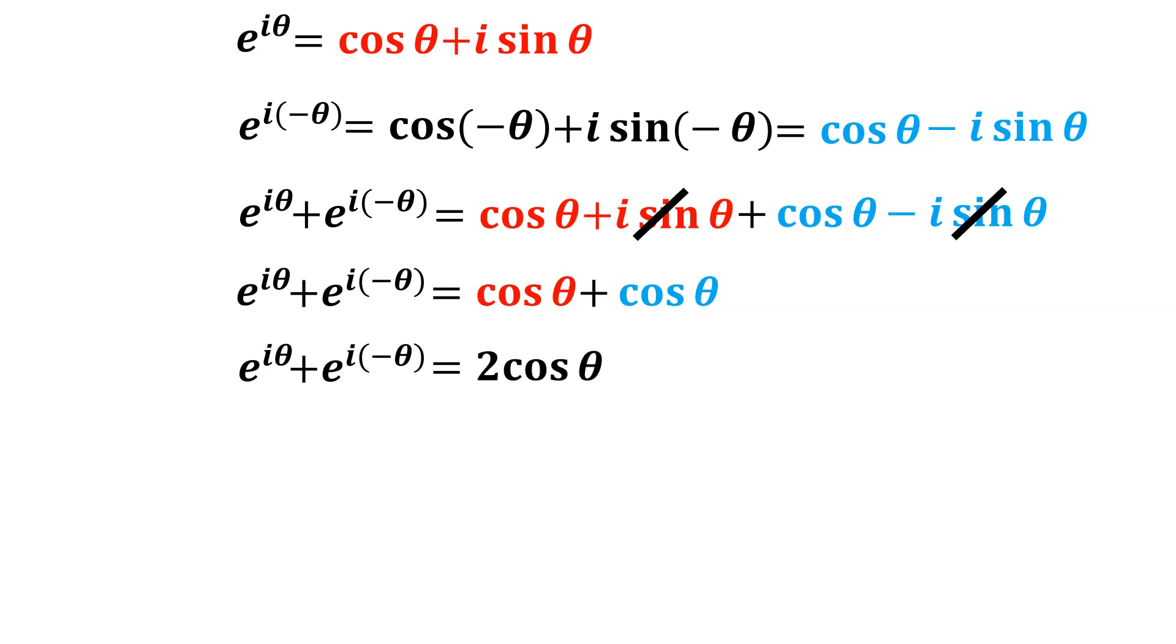And then lastly, you need to get cosine by itself, which is what we're trying to find. Simply divide both sides by 2. So divide that side by 2, divide that side by 2. On the right side, cross off the two 2s, and that's going to give us that e to the iθ plus e to the negative iθ divided by 2 equals cos θ.